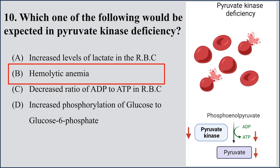Glycolysis is a 10-step reaction; the last reaction is phosphoenolpyruvate converted into pyruvate by pyruvate kinase, which also synthesizes ATP. When pyruvate kinase is inhibited or absent, glucose oxidation is affected; as a result, it increases the reductive stress inside red blood cells. Due to increased reduction, hemolysis and lysis of red blood cells occurs, decreasing the number of RBCs and leading to hemolytic anemia.